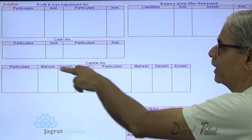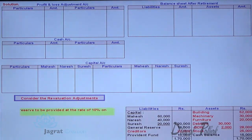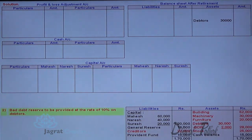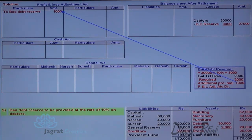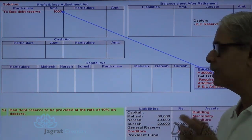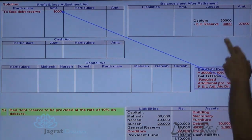The profit and loss adjustment account means revaluation account. First, consider the revaluation adjustment. Bad debt reserve is to be provided at 10% on debtors. Debtors are 30,000, so 10% bad debt reserve is 3,000. Existing bad debt reserve is 2,000, so additional provision required is 1,000. Therefore, revaluation account is debited with 1,000, and debtors appear on the balance sheet at 27,000.